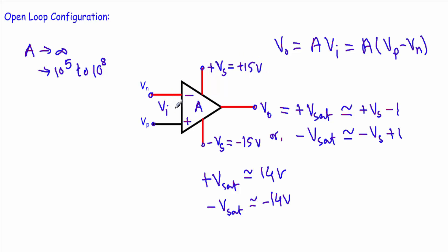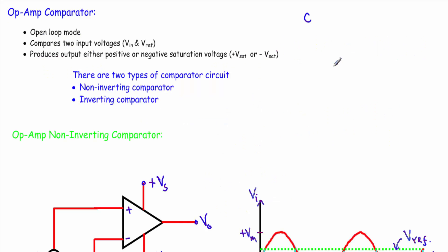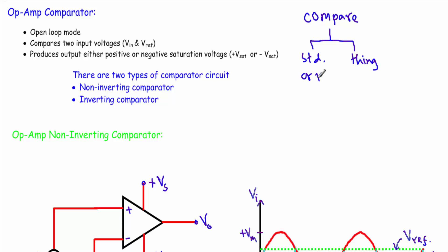The operational amplifier uses this property — that even at the slightest input voltage it operates in positive or negative saturation — to function as a comparator circuit. An operational amplifier comparator is connected in open-loop mode, and it compares an input voltage with a known reference voltage. Just as we compare anything against a standard reference, the op-amp comparator does the same with voltage.